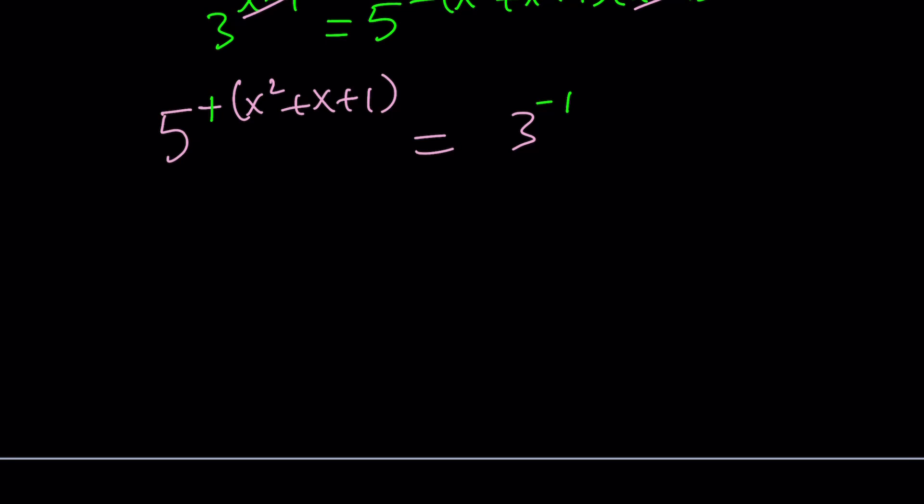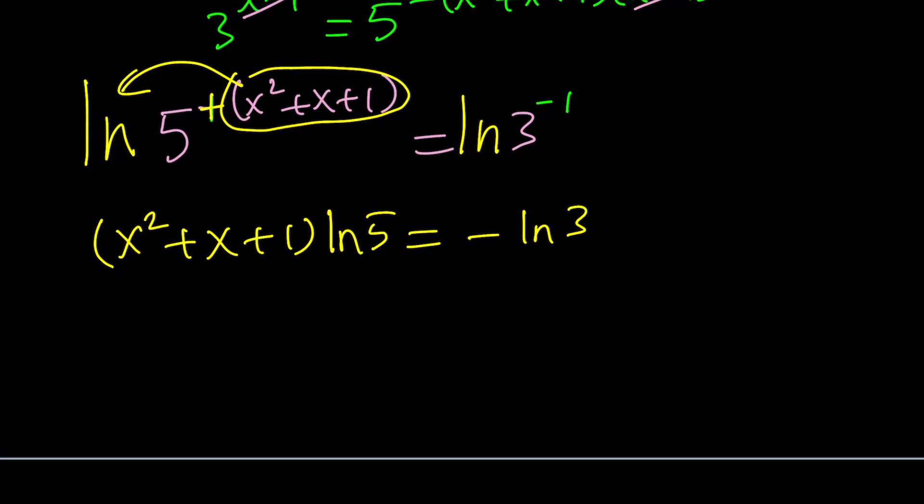Now, we're going to ln both sides. Let's do it. ln here and ln here. What that does is, and by the way, this plus sign is kind of redundant, but anyways, or unnecessary. Bring this to the front, you get x squared plus x plus 1 times ln 5 equals ln 3 to the power of negative 1, which can be written as negative ln 3, or you can write it as ln 1/3. Same thing, right? Great.